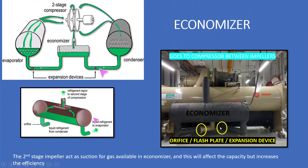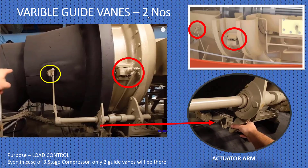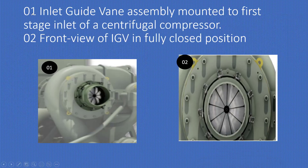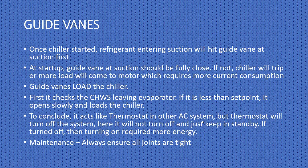You can see the economizer here with orifices on both sides — also called an expansion device. It goes to the compressor between the impellers. Variable inlet guide vanes (IGV), also called gate vents, are available in two numbers to control the load. Even in a three-stage compressor, only two gate vents are present: number one is the inlet gate vent assembly mounted to the first-stage inlet of the centrifugal compressor, and number two is the front view of the inlet gate vent in the fully closed position.